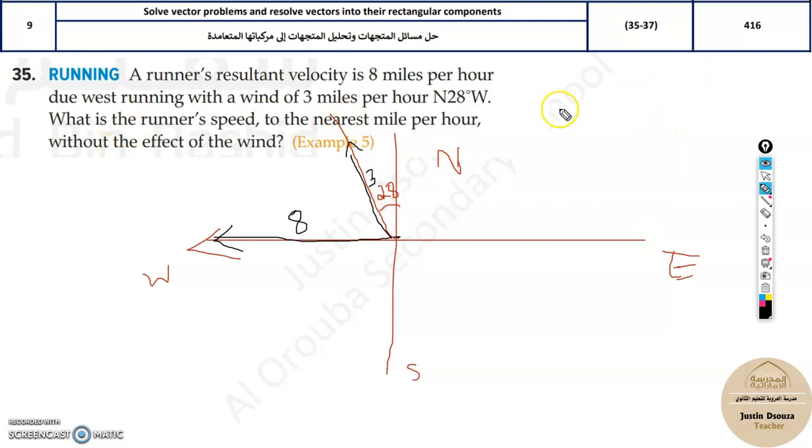Generally they give you a person running at this speed with wind blowing in the opposite direction, and the resultant will be something like this. But in this case they've given the final result and the wind. We need to find the position of the runner.